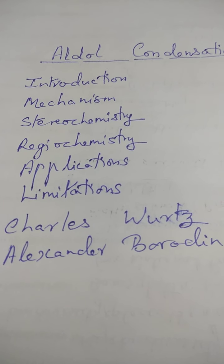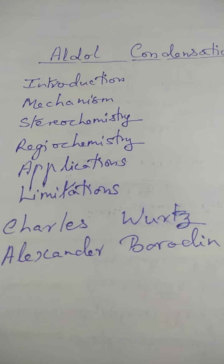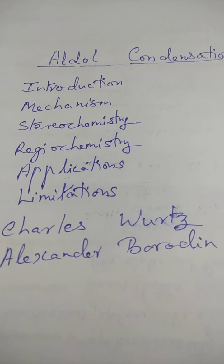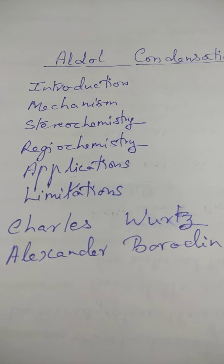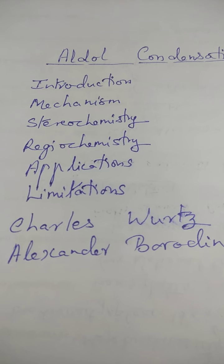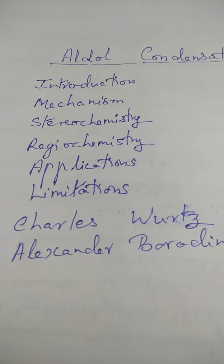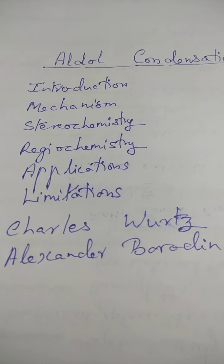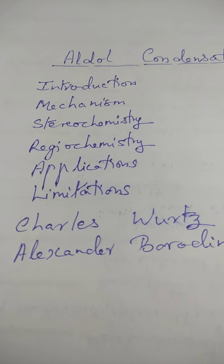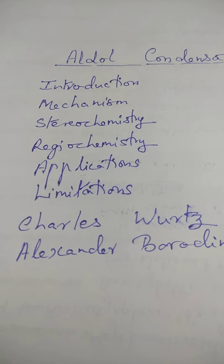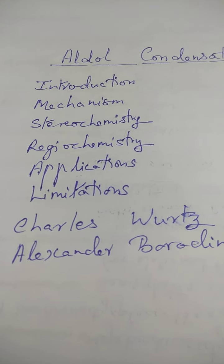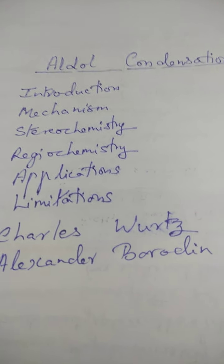Aldol condensation dates back to 1869 when it was put forward by Alexander Borodin and simultaneously by Charles Woods in the year 1872. It is a typical reaction of aldehydes having hydrogen in the alpha position to the carbonyl group, and is also given by ketones in the presence of a base.